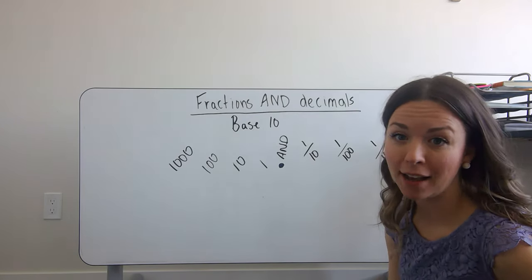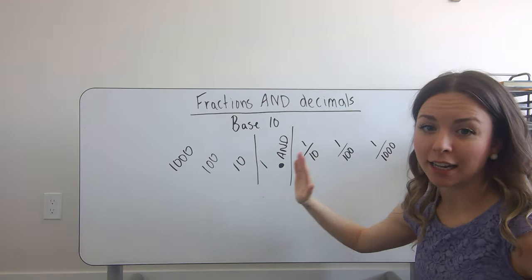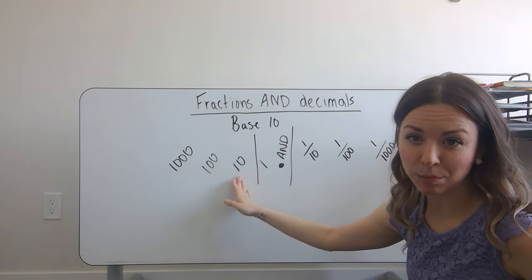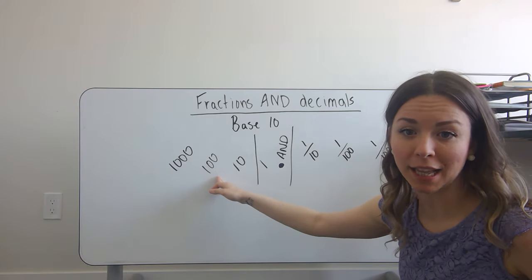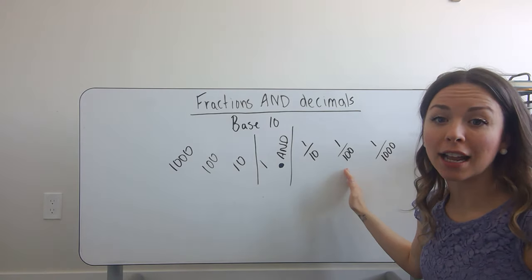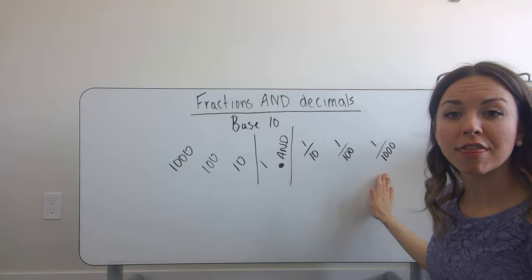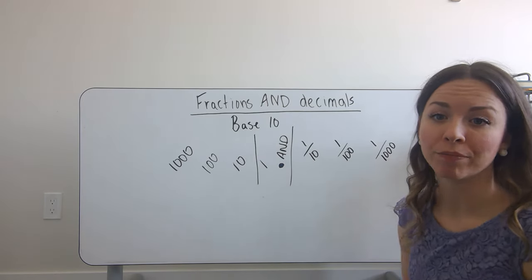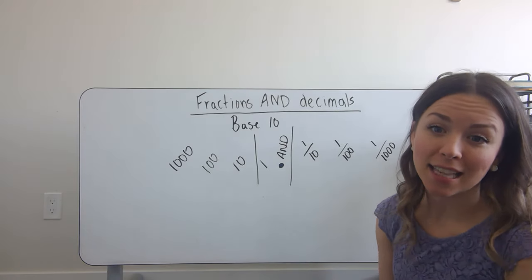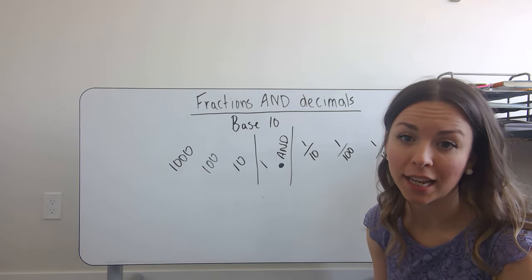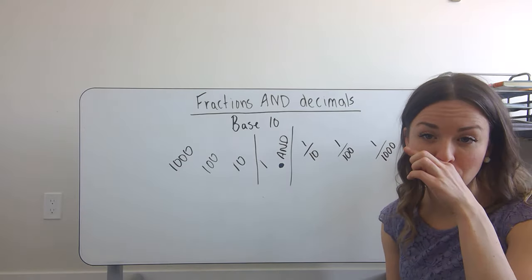I can actually see a pattern here. When we block off our ones place and our decimal, we can see that we have a symmetrical view: our tens place in the whole value, our tenths place in the decimal value; our hundreds place in the whole value, our hundredths place in the decimal value; our thousands place in the whole value, our thousandths place in the decimal value. The cool thing about changing between decimals and fractions is that as long as we know how to say the decimal in word form, we'll know what fraction we need.